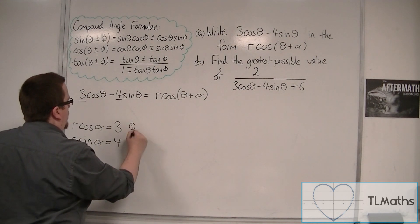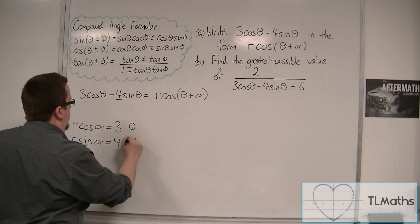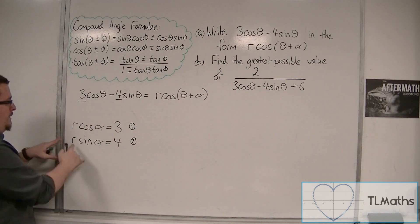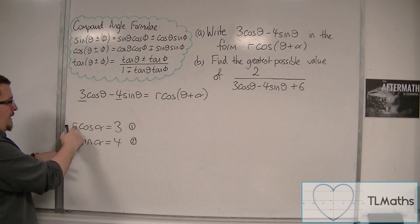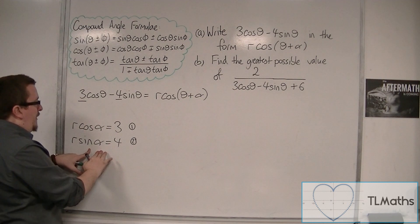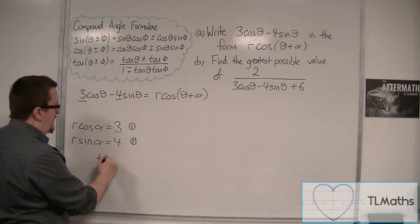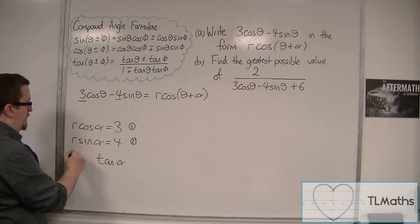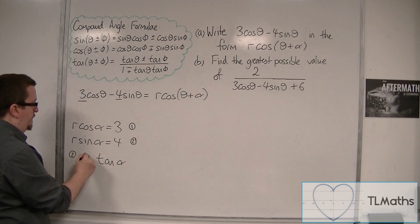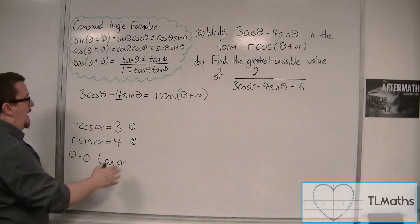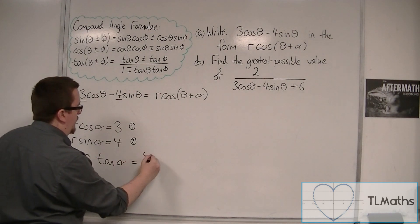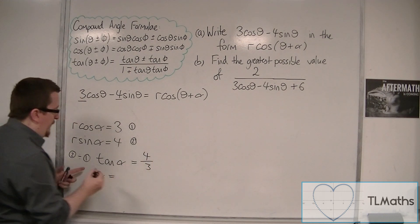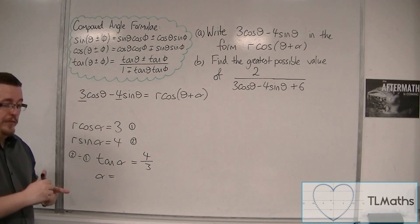This is equation 1, this is equation 2. We're going to do equation 2 divided by equation 1. The r divided by r cancels. Sinα divided by cosα is tanα. So this is equation 2 divided by equation 1, giving us 4 divided by 3 — so 4 thirds.